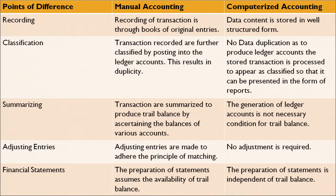Let's now compare how manual records were maintained versus how data is maintained through computer-aided systems. Recording: in the manual process, recording of a transaction is through books of original entries; in computer-aided systems, data content is stored in well-structured form. Classification: in manual, transactions recorded are further classified by posting into ledger accounts, resulting in data duplicity; in computer-aided systems, no data duplications are done. Summarizing: in manual, transactions are summarized to produce trial balance by ascertaining balances; in computer-aided systems, generation of ledger accounts is not necessarily a condition for preparing trial balance.